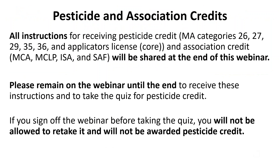Just a couple of reminders about the pesticide and association credit process for today's broadcast. All instructions for receiving pesticide credit — for Massachusetts categories 26, 27, 29, 35, 36, and our applicator's license or core license — are available, as well as the association credits. Those will be shared at the end of this webinar. Please remain on the webinar until the very end to receive instructions and to take the quiz for the pesticide credit, which is only required for those looking for pesticide credit today. If you sign off before taking the quiz, you will not be allowed to retake it and will not be awarded the credit.